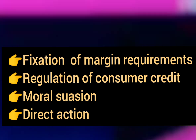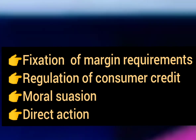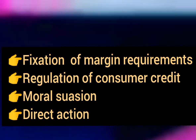Next, direct action. The central bank takes direct action against commercial banks that do not follow its guidelines. When a bank does not comply, the central bank can address this through direct action — including charging a penalty rate of interest, withdrawing discount facilities, and taking direct actions against non-compliant banks.